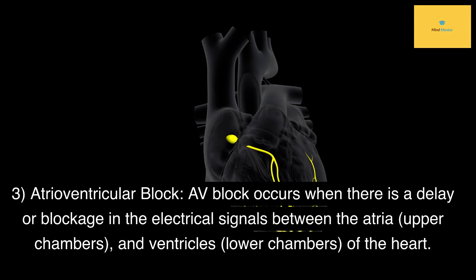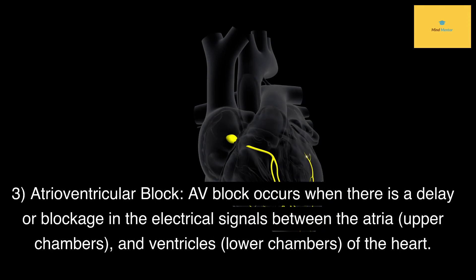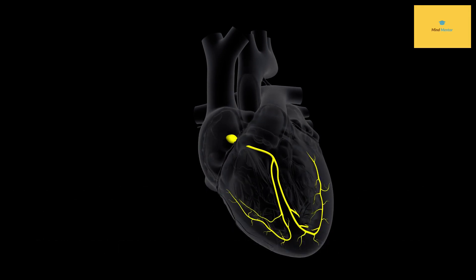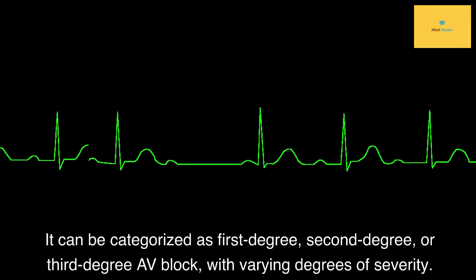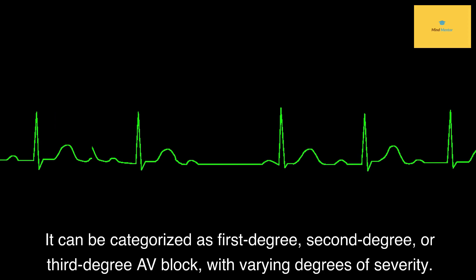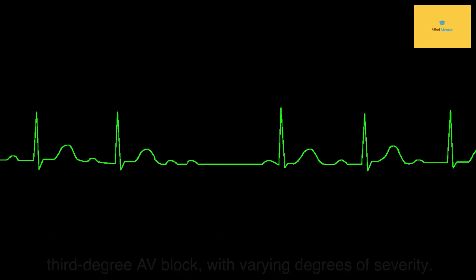3. Atrioventricular block: AV block occurs when there is a delay or blockage in the electrical signals between the atria (upper chambers) and ventricles (lower chambers) of the heart. It can be categorized as 1st degree, 2nd degree, or 3rd degree AV block, with varying degrees of severity.